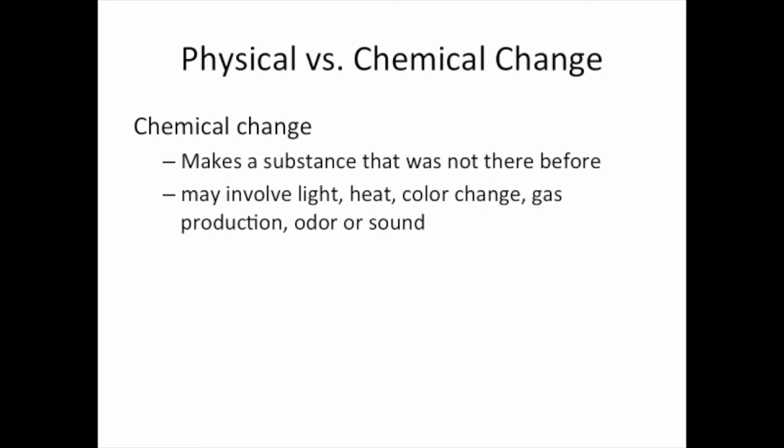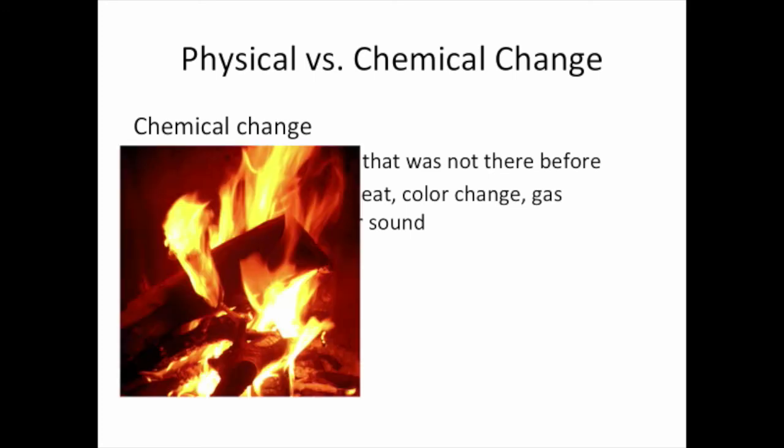An example of a chemical change is something like wood burning. Here we started with wood that's primarily made up of carbon, and now our products at the end will be carbon dioxide and water.